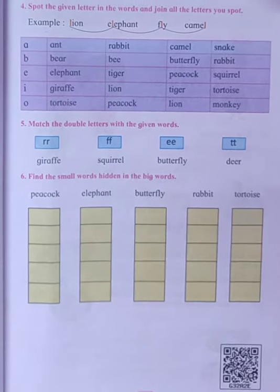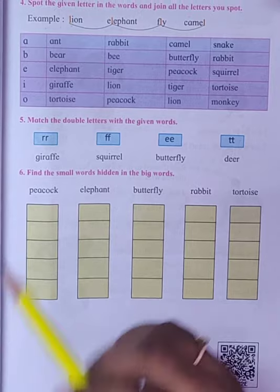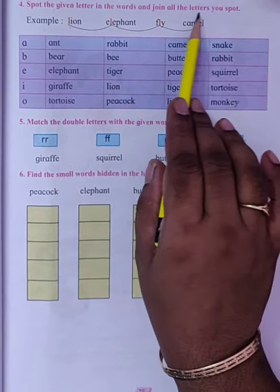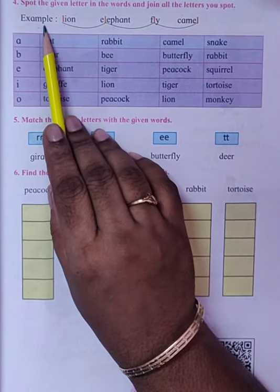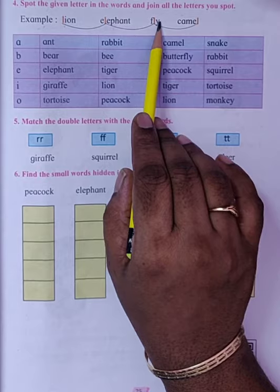Good afternoon students. Today we will solve three exercises from the lesson Jungle Safari. Spot the given letters in the words and join all the letters you spot. The first example is given: Lion, Elephant, Fly, Camel.